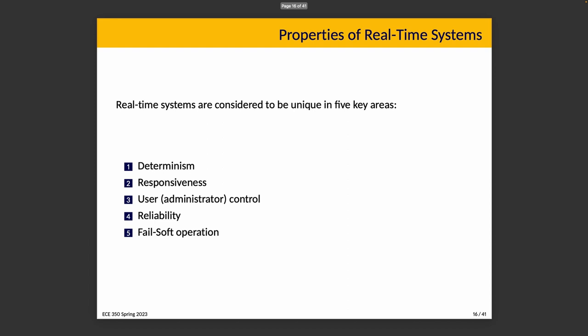Real-time systems are considered unique in five important areas: determinism, responsiveness, administrator control, reliability, and fail-soft operation. The last two are listed separately in the literature, but they should be considered together. We'll cover each of these, with some deferred to later discussion.